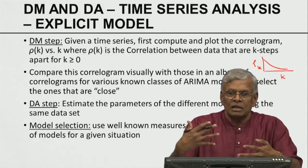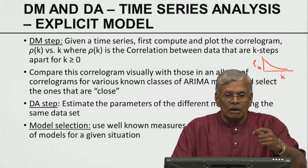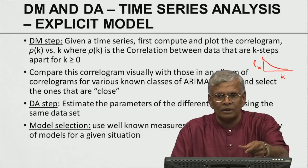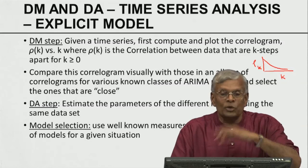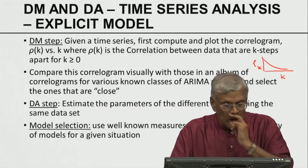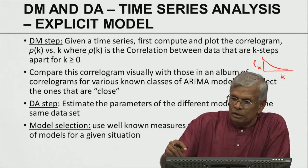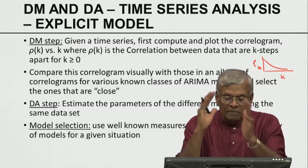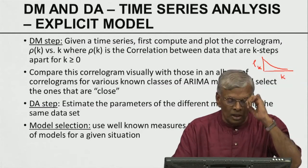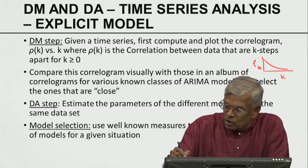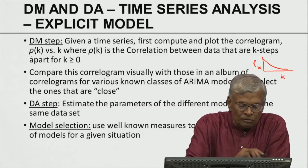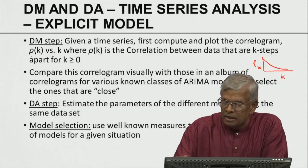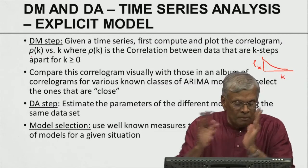If you think of unemployment percentage, unemployment does not vary day by day — it varies over a period of months. So today's unemployment is very much related to yesterday's. The correlogram — the plot of rho(k) versus k — captures the correlation between data that are k steps apart. Rho(k) is a correlation between data that are k steps apart. This is data-dependent, so it is essentially a summary of what the data tells us.